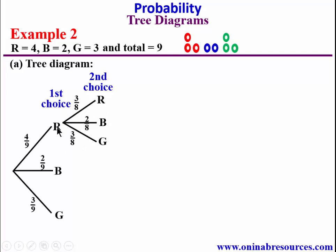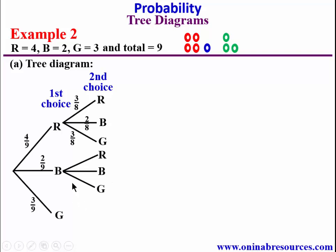Now we go to the branch where she picks blue for the first choice, meaning the red will still be intact but blue will be reduced by 1. The probability of picking red second is 4/8, blue second is 1/8, and green second is 3/8.